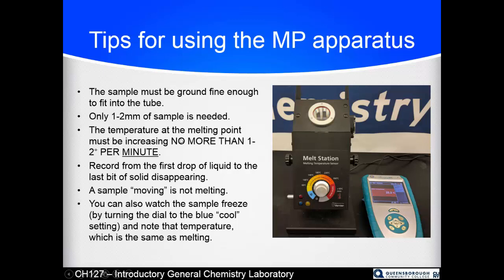Unlike boiling points where you're looking for a constant temperature, for melting points you are recording a range. The temperature probe reads to the tenths place, so record all digits — from the first drop of liquid you see to the last bit of solid disappearing. You must record a melting point range. Note that the sample may shift around in the capillary tube before it melts — that is not melting. You have to see liquid and then watch the solid disappear.